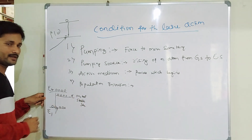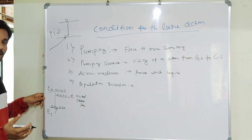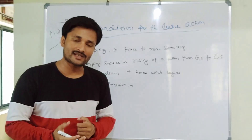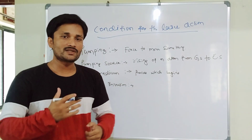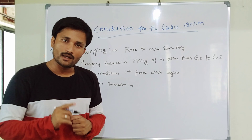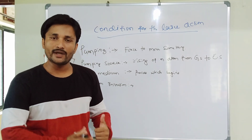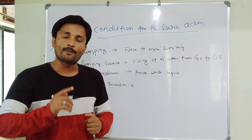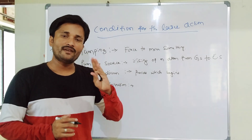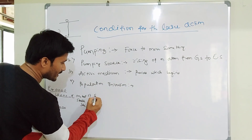Population inversion is nothing but maintaining more number of electrons in the excitation state compared to the ground state — that is called population inversion. This is the fourth point. The fifth necessary condition is stimulated emission.